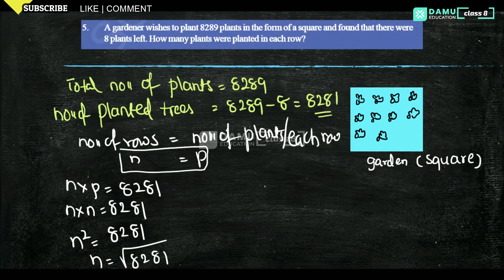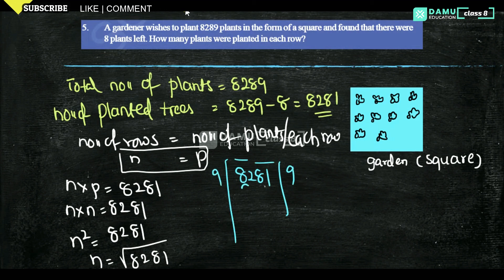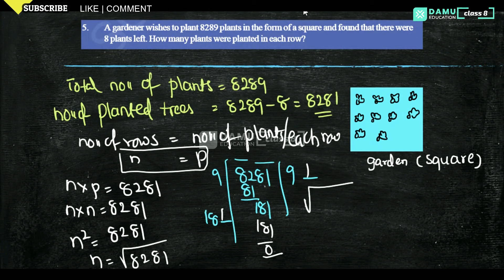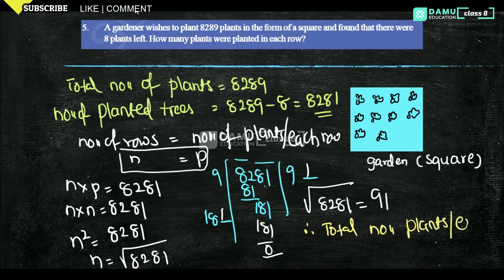To find √8281, we group digits as 82 and 81. The nearest perfect square below 82 is 81 (9²), so 9 goes in the quotient. 9 × 2 = 18, bringing down gives 181. We keep 181, and 181 ÷ 181 = 1, so the next digit is 1. Therefore, √8281 = 91. The total number of plants per each row is 91 plants.